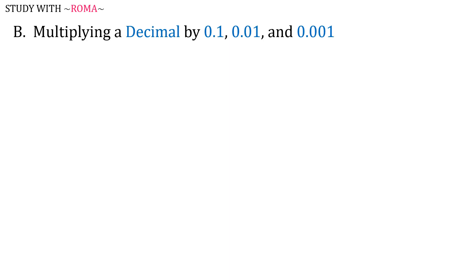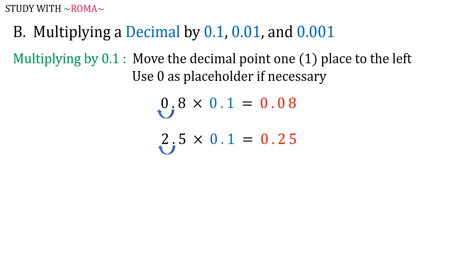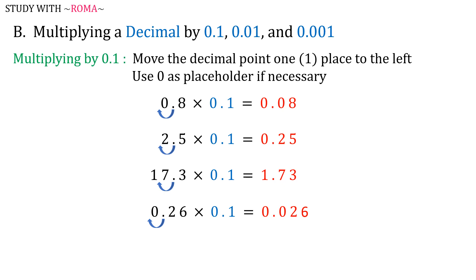Now let's move on to multiplying a decimal by 0.1, 0.01, and 0.001. When multiplying a decimal by 0.1, move the decimal point one place to the left, and use 0 as a placeholder if necessary. For example: 0.8 times 0.1 is equal to 0.08; 2.5 times 0.1 is equal to 0.25; 17.3 times 0.1 is equal to 1.73; 0.26 times 0.1 is equal to 0.026; and 4.28 times 0.1 is equal to 0.428.